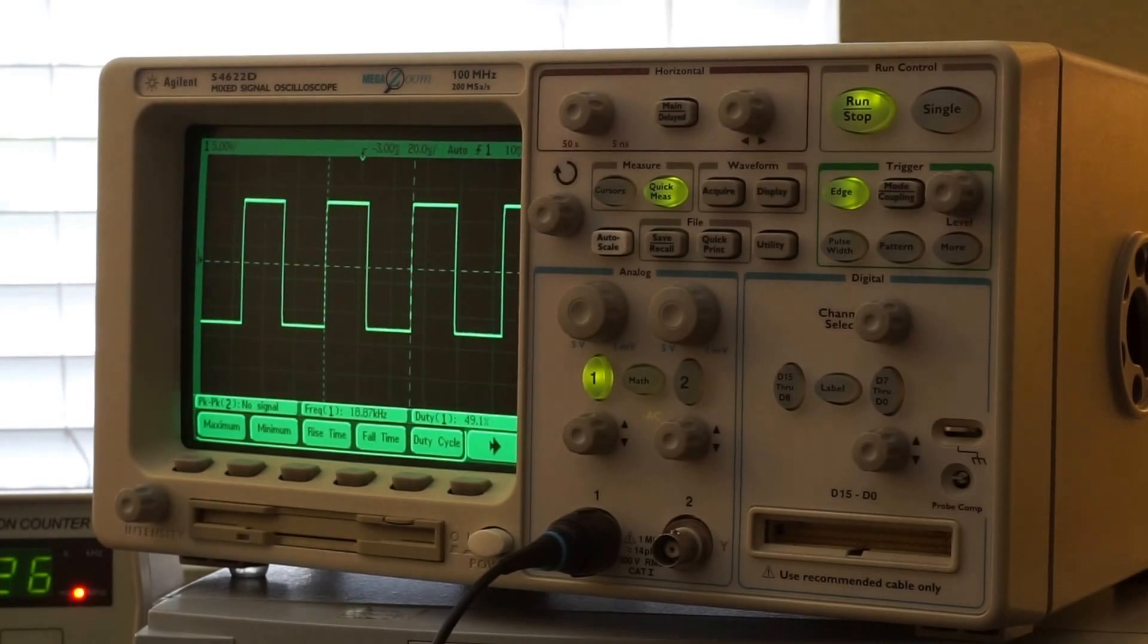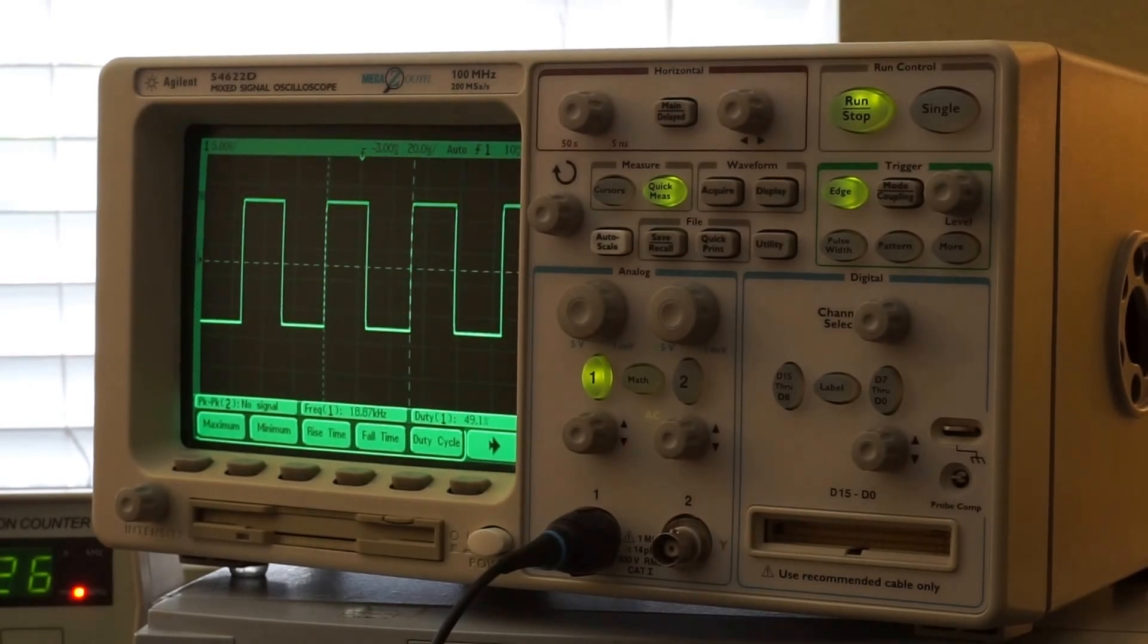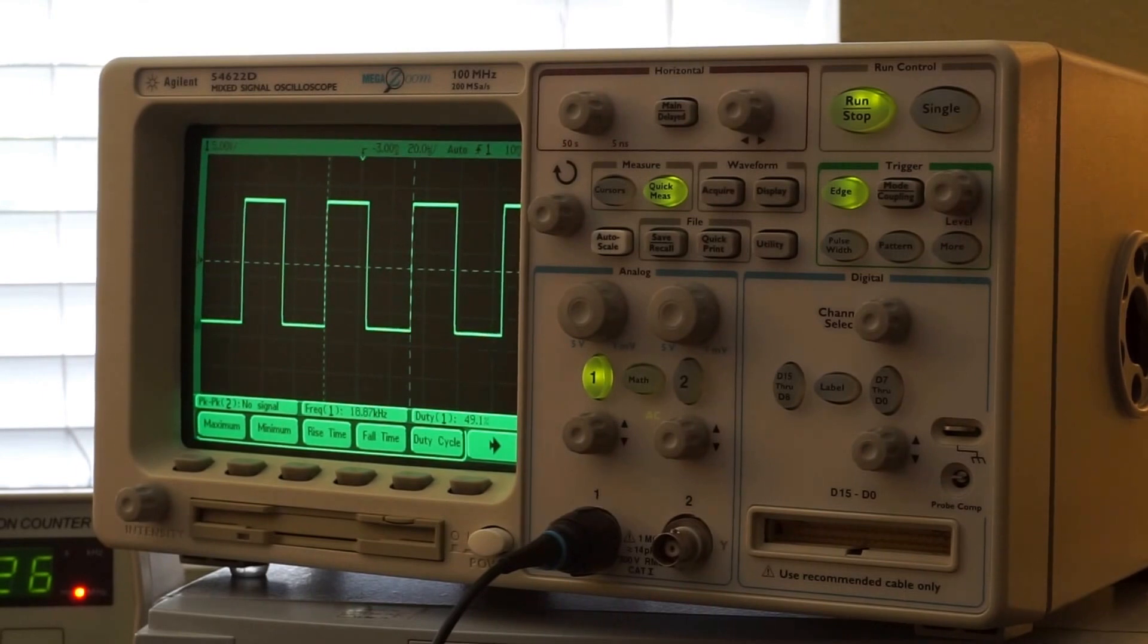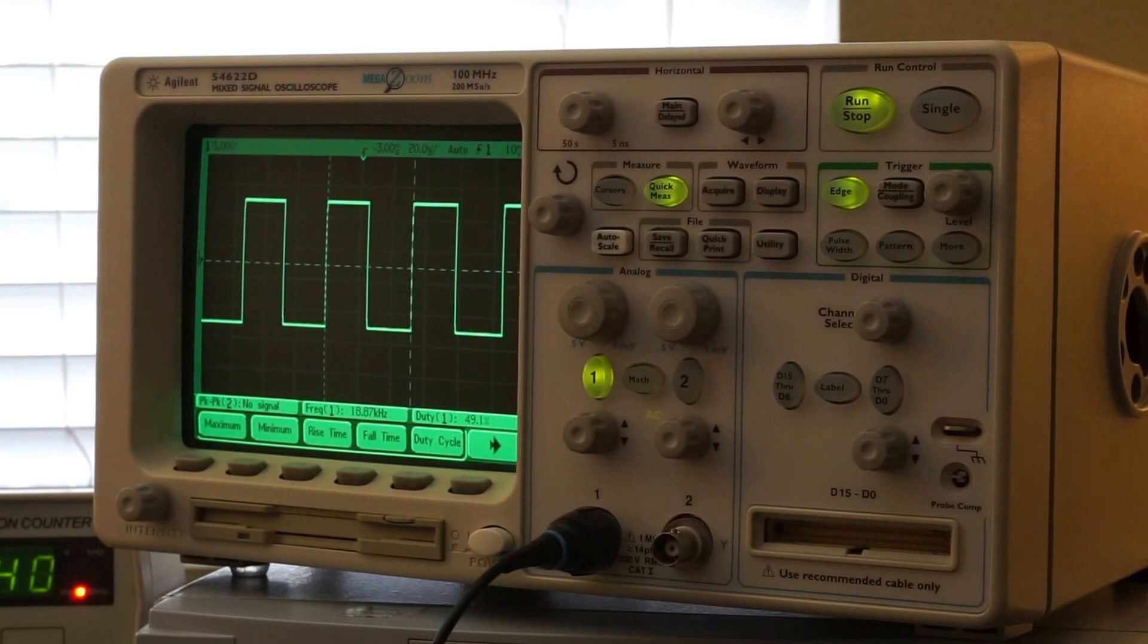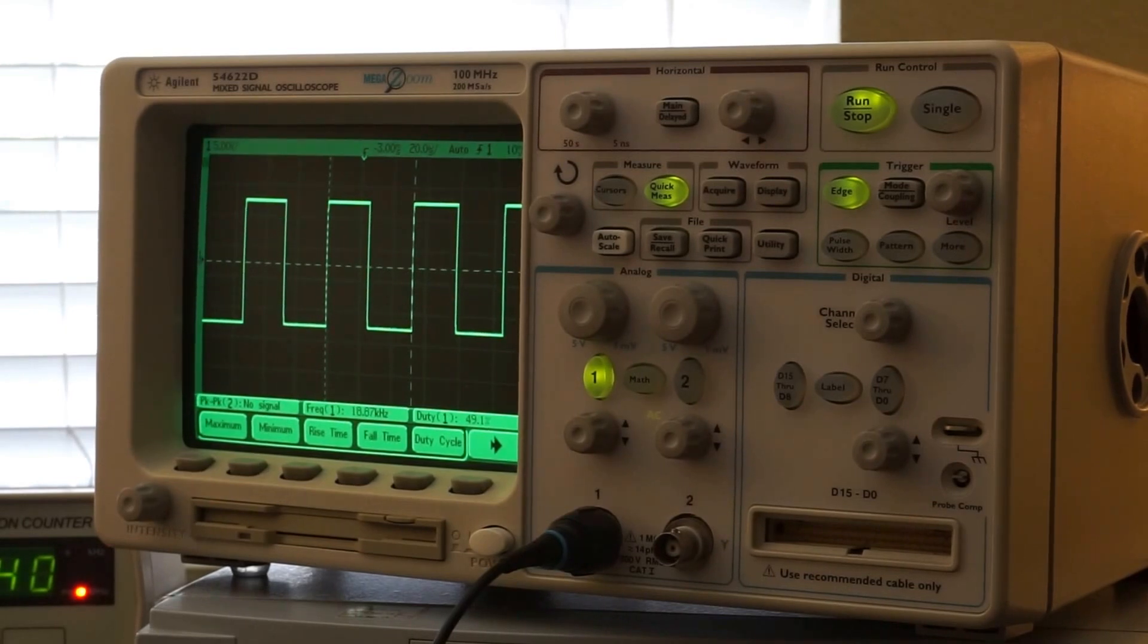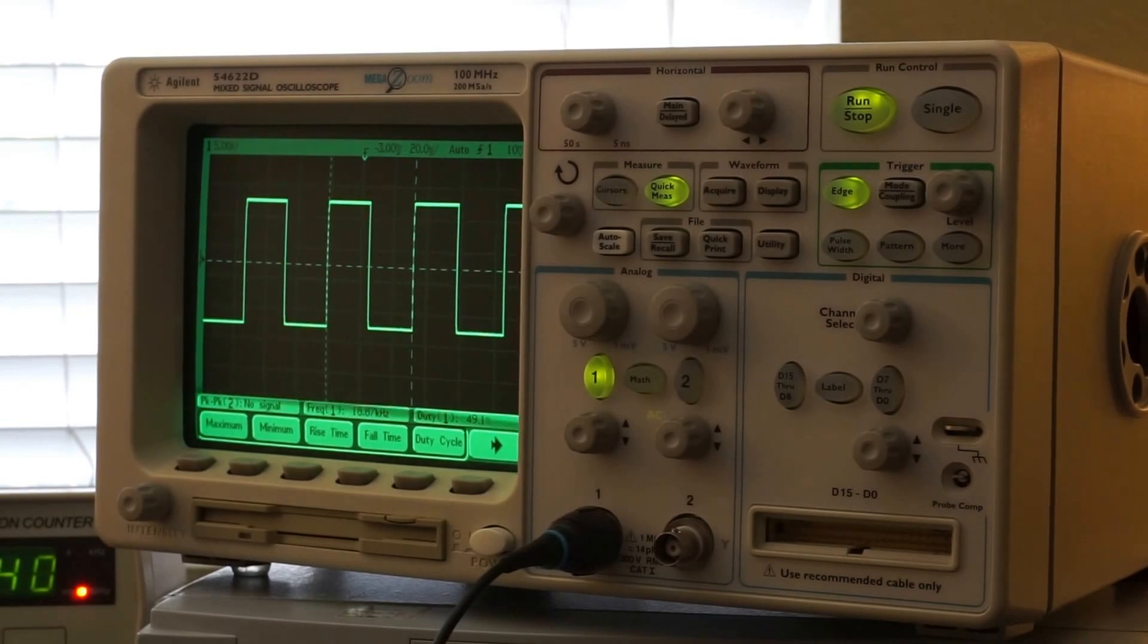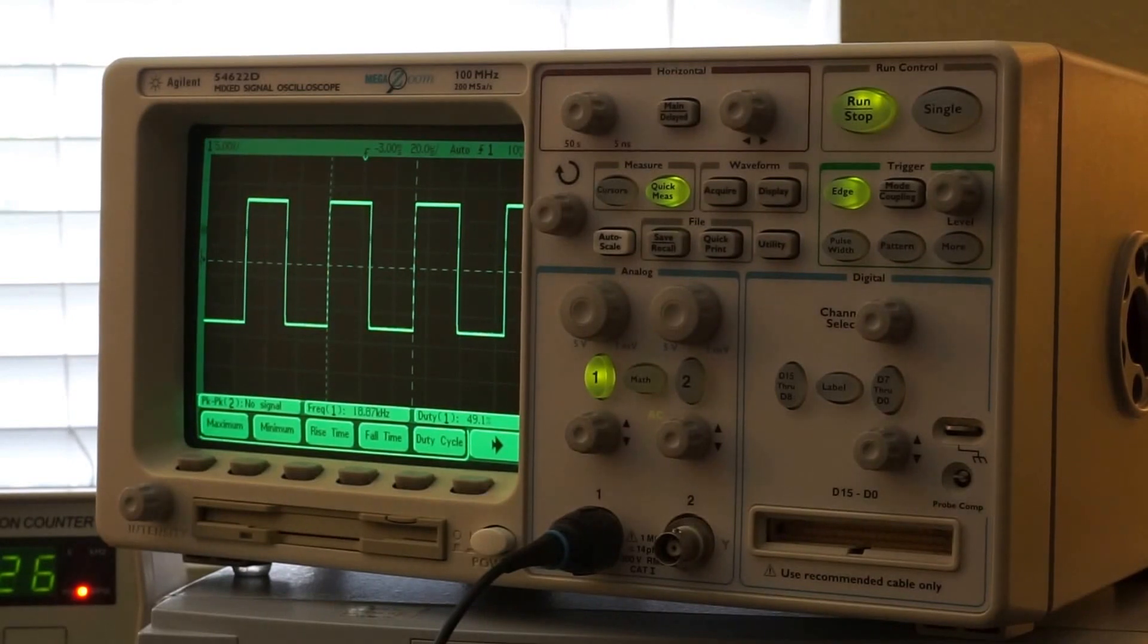So the DMM check plus is rated at 18.868 kilohertz. I'm getting 18.87 kilohertz. That's perfect. And duty cycle is rated at 49.1168 and I'm getting 49.1. So it's reading absolutely dead on.